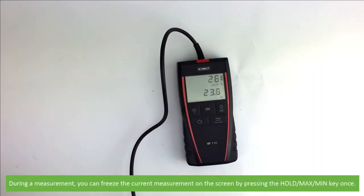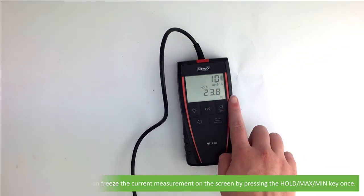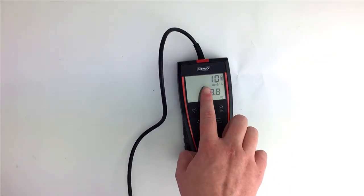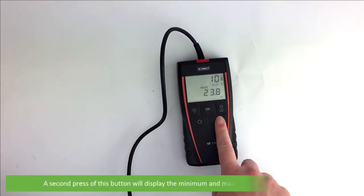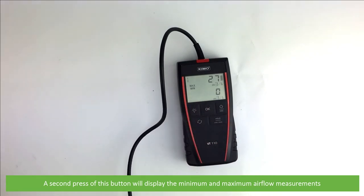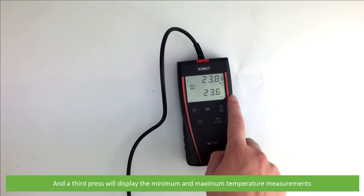During a measurement, you can freeze the current measurement on the screen by pressing the hold min max key once. A second press of this button will display the minimum and maximum airflow measurements. A third press will display the minimum and maximum temperature measurements.